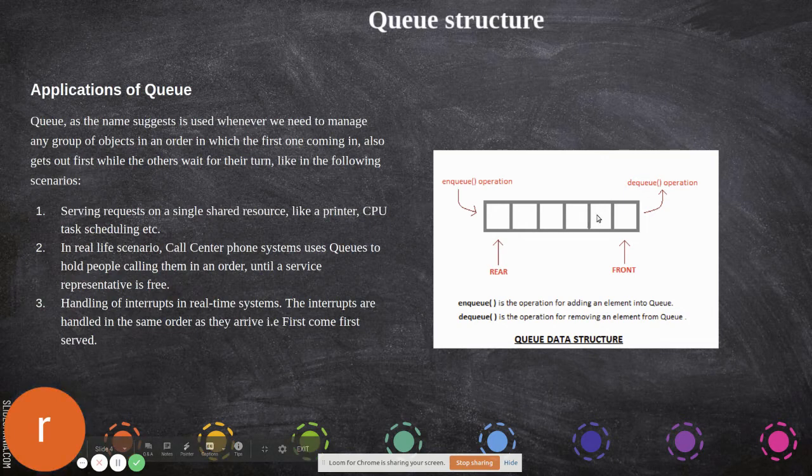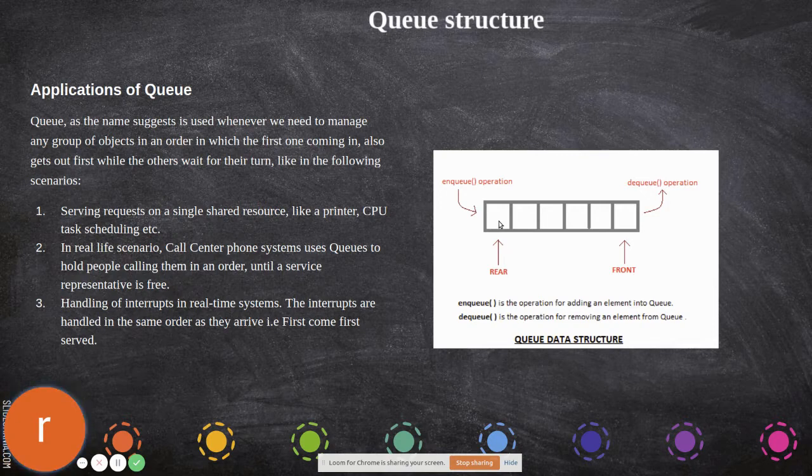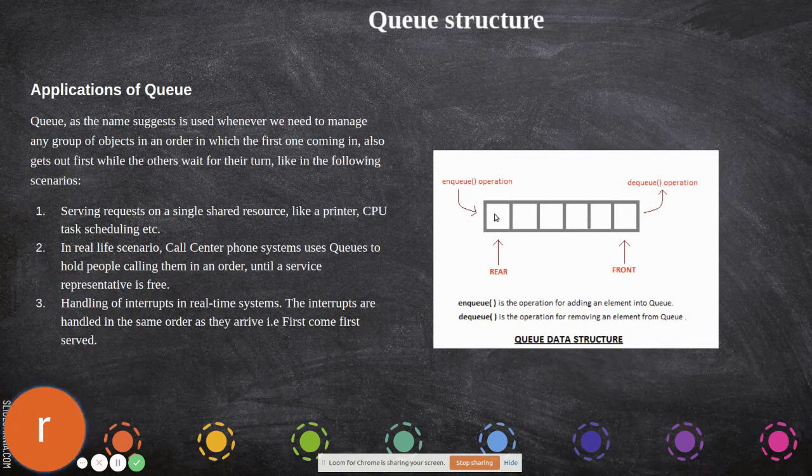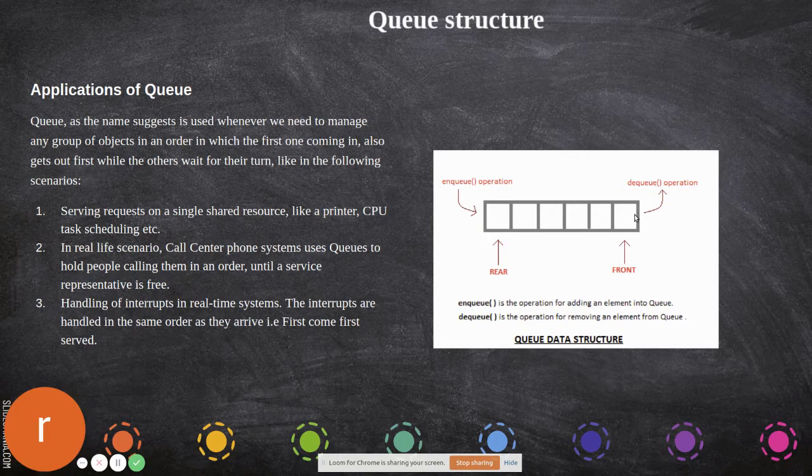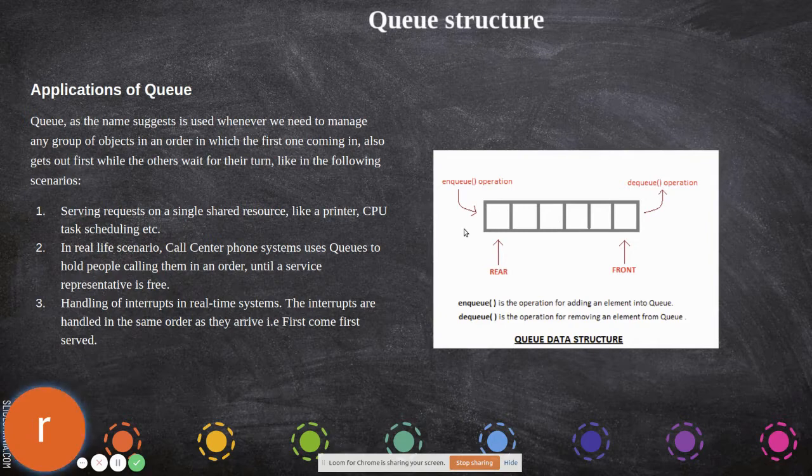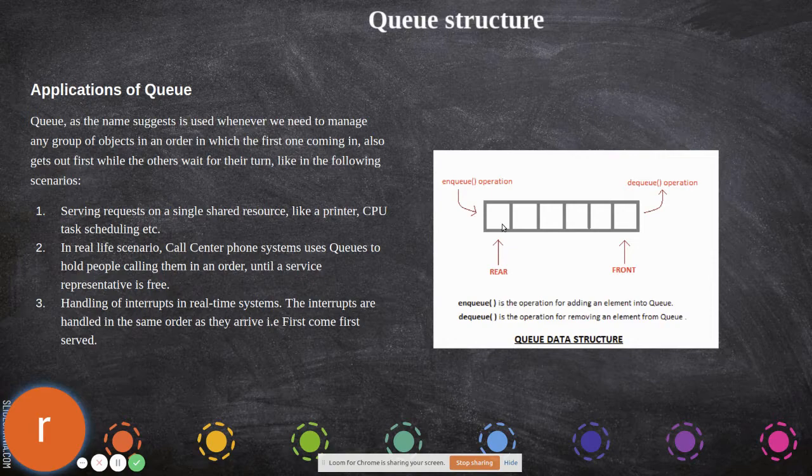Now let us take an example. We are going to see the array implementation of queue. Here we have used an array - the front index starts from 0. The indices are 0, 1, 2, 3, 4, 5, so six elements can be inserted. This is the front and this is the rear. You can remove elements from the front - that's called dequeue. You can add elements through the rear - that's called enqueue.